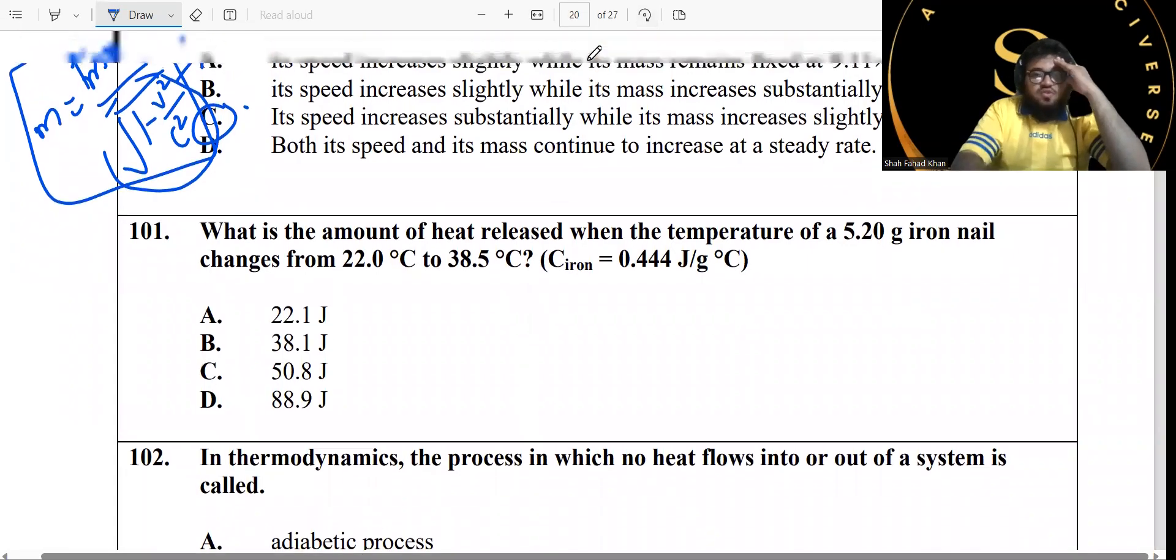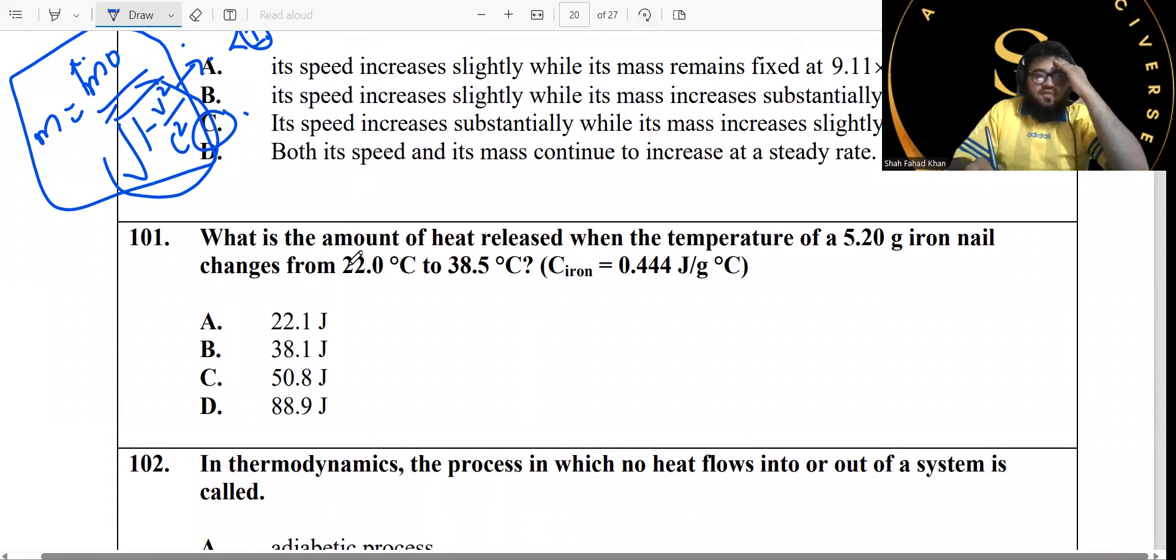All right, guys, let's do the last 10 MCQs of this physics section. What is the amount of heat released when the temperature of 5.2 grams of iron changes from 23.0°C to 38.5°C? They'll change it from this much to this much. Now, you guys need to just calculate the change in temperature. Let's find out the difference.